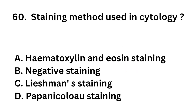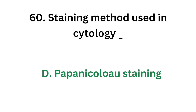Question number 60: Which staining method is used in cytology? Option A: Hematoxylin and eosin staining. Option B: Negative staining. Option C: Leishman staining. Option D: Papanicolaou staining. The correct answer is Option D: Papanicolaou staining. The staining method used in cytology is Papanicolaou staining.